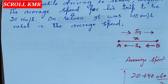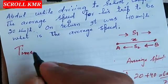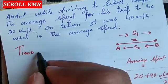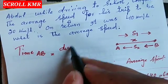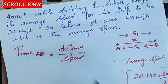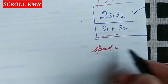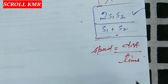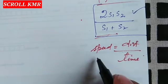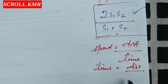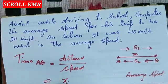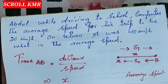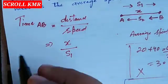سب سے پہلے ہم دیکھیں گے: A سے B تک جب Abdul جاتا ہے تو کتنا time لگتا ہے۔ Time ہمیں question میں نہیں دیا گیا، تو ہم derive کریں گے۔ Time from A to B = distance divided by speed۔ کیونکہ formula ہے: speed = distance / time، اس لیے time = distance / speed۔ A سے B تک distance ہے x اور speed ہے s1، تو time from A to B = x / s1۔